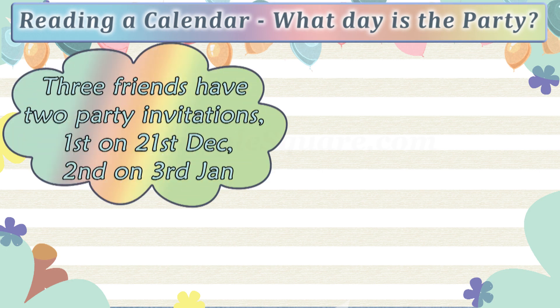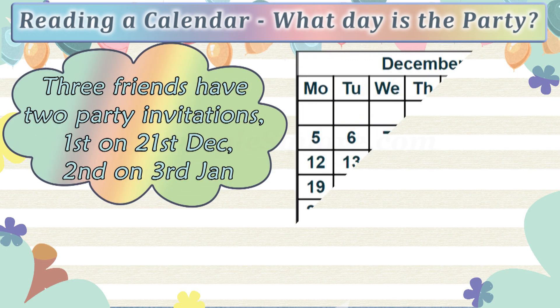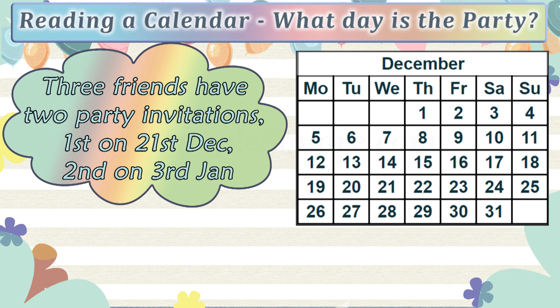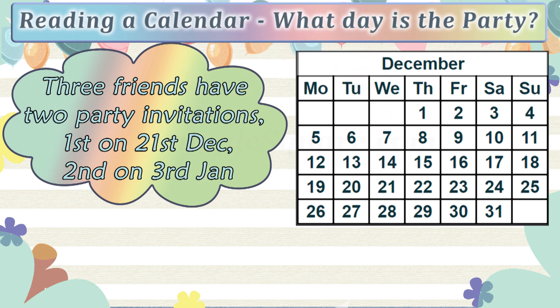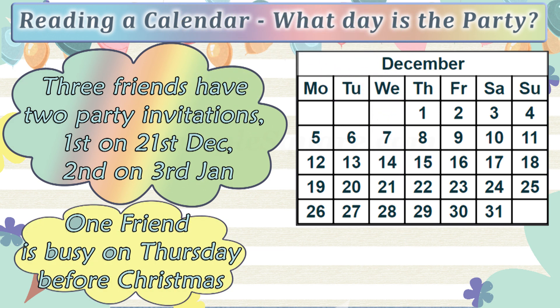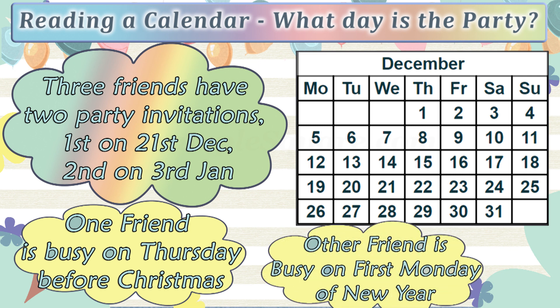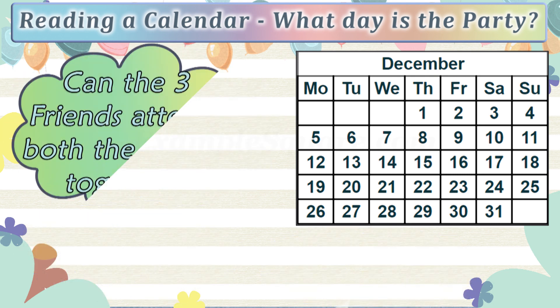Three friends have two party invitations: the first on 21st December and the second in the new year on the 3rd of January. One friend is very busy on the Thursday before Christmas and will not be able to attend if the party falls on a Thursday. Another friend has other plans on the first Monday of the new year and will not be able to attend if the party is on that Monday.